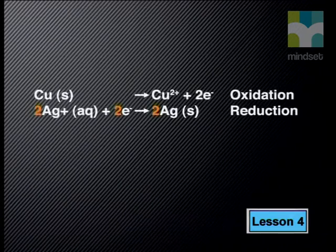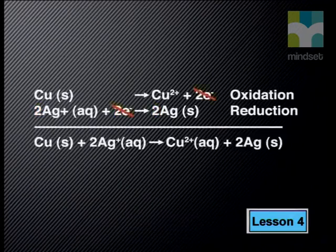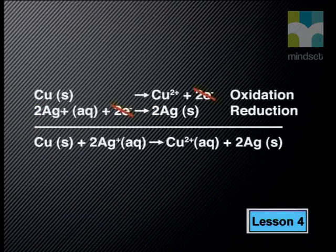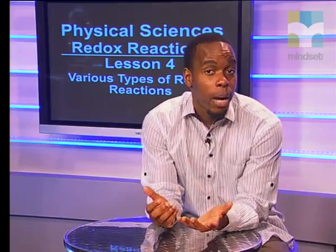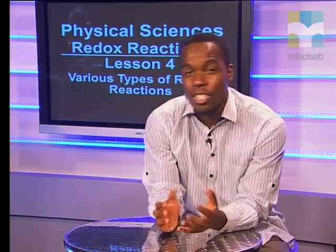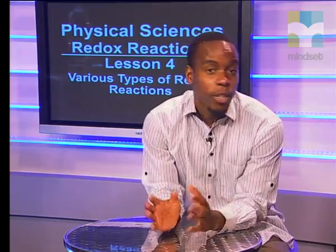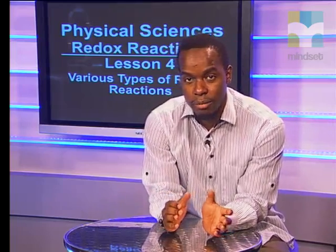Adding together the reactants and products, the overall redox reaction is: Cu + 2Ag⁺ → Cu²⁺ + 2Ag. This type of reaction is not just a redox reaction but also a displacement reaction.